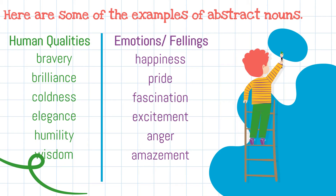Here are some of the examples of abstract nouns. Human qualities: bravery, brilliance, coldness, elegance, humility, wisdom. Emotions and feelings: happiness, pride, fascination, excitement, anger, amazement.